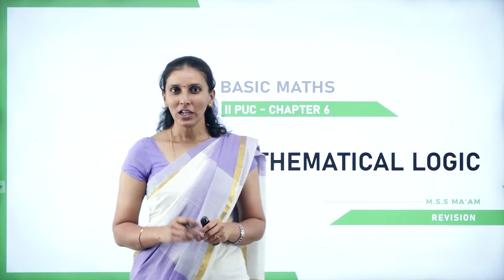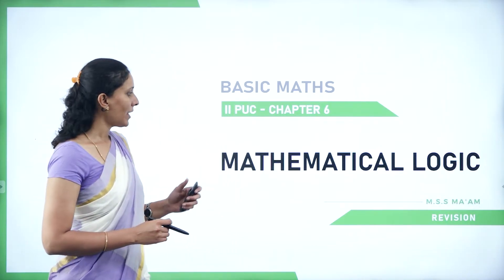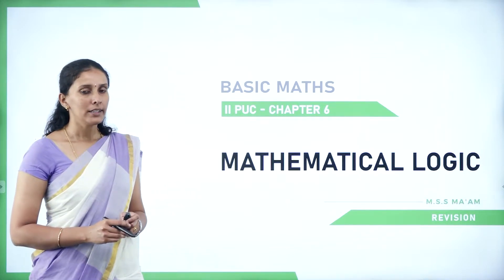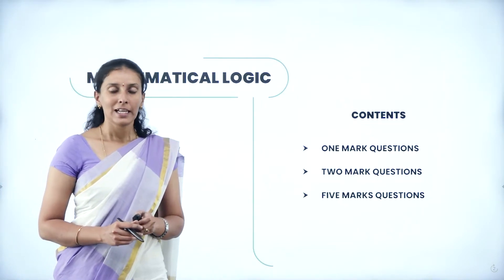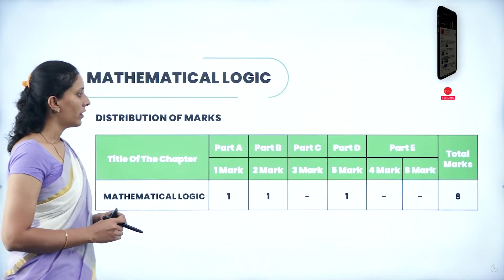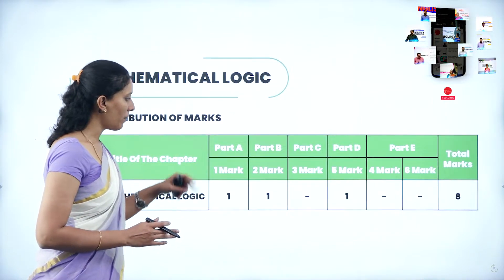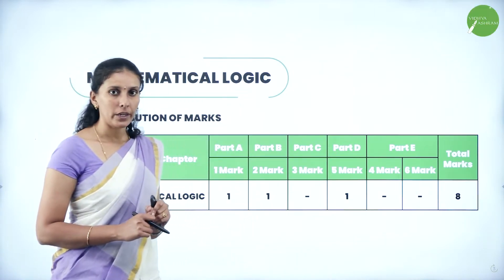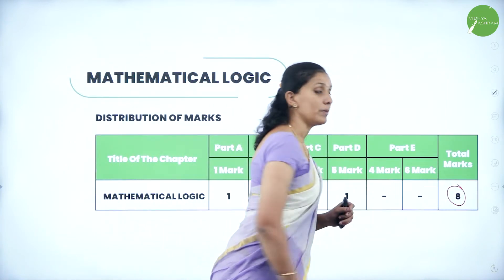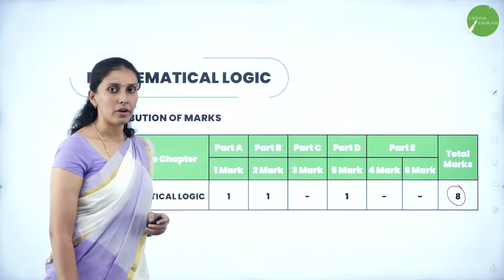Hello everyone, a warm welcome to one and all. This is Yashruti ma'am lecturing in Vidyashram, the temple of excellence, Mysore. In this session, we are going to take revision on mathematical logic. So what are the type of questions we will get from this chapter? There are one mark, two marks and five mark questions. You have part A, part B, part C, part D, part E section in your question paper. In that, you will get one one-mark question, one two-mark question in part B, and one five-mark question in part D. So in total, you will get eight marks from this chapter.